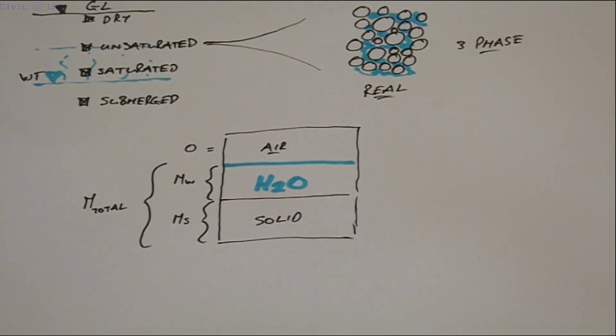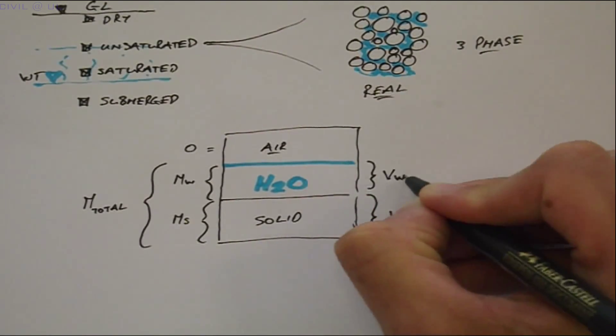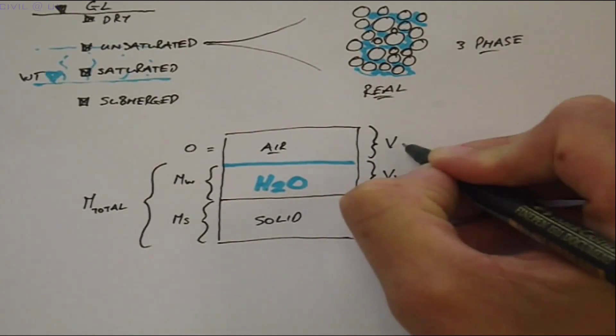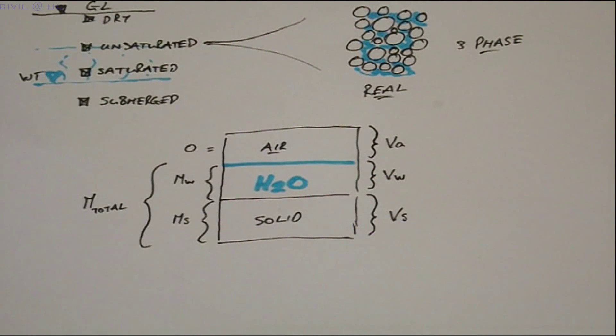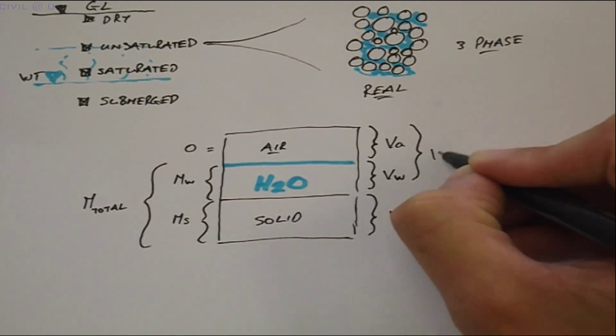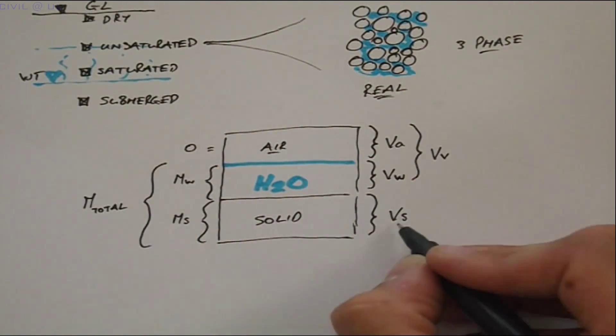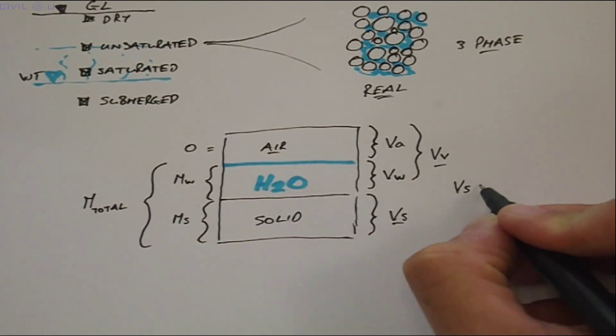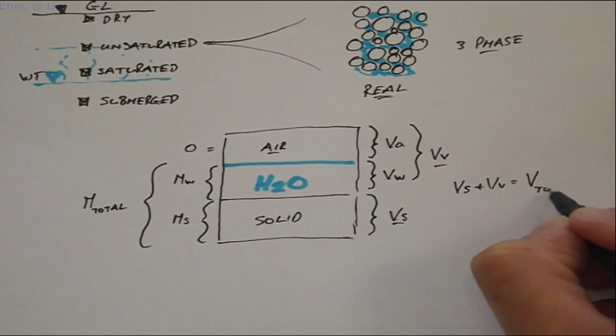The volumes of each phase can also be represented on the diagram. VS represents the volume of solids, VW the volume of water and VA the volume of air. Note that VW and VA combine to give what's known as the volume of voids.